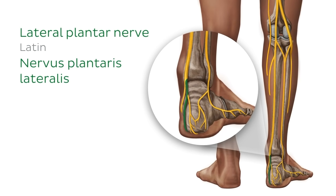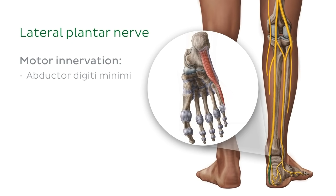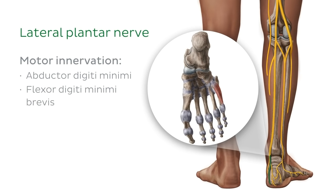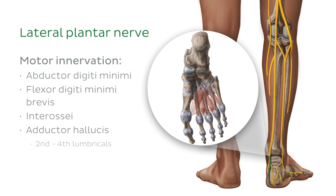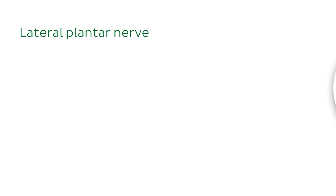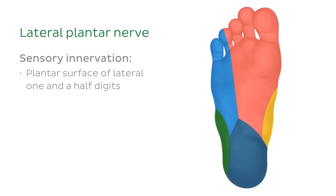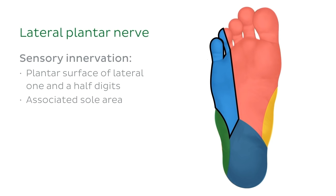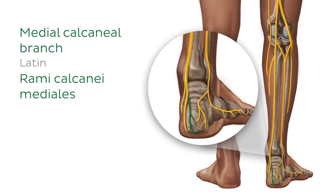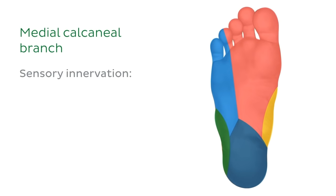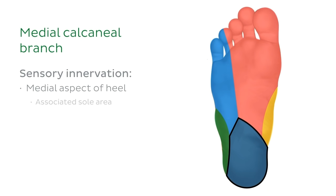We must also have a lateral plantar nerve. This nerve is also a terminal branch of the tibial nerve and provides motor innervation to the abductor digiti minimi muscle, the flexor digiti minimi brevis, the interossei, the adductor hallucis, and the second to fourth lumbricals. It also provides sensory innervation to the plantar surface of the lateral one and a half digits and the associated sole area. The last branch of the tibial nerve is the medial calcaneal branch, which provides sensory innervation to the medial aspect of the heel and associated sole area.